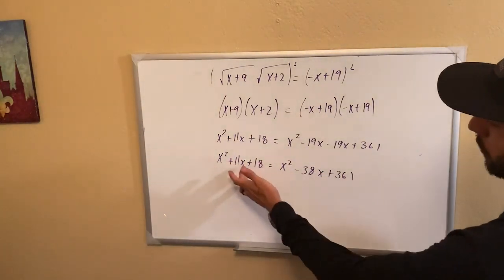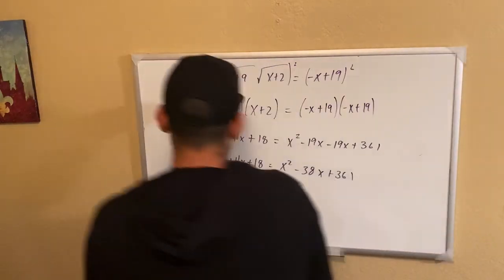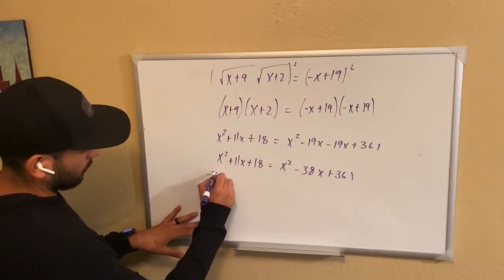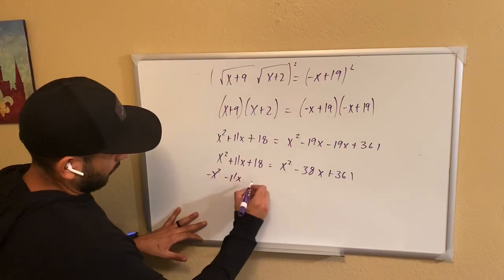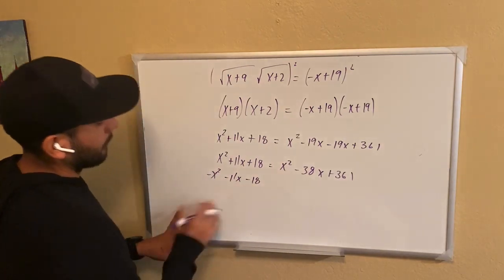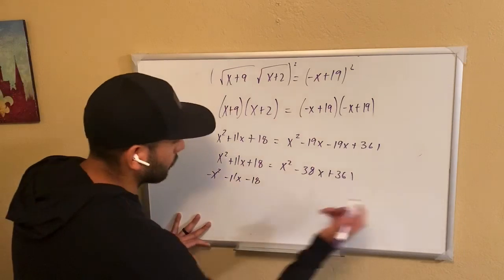Okay, so I'm going to go ahead and bring the x squared, the 11x, and the 18 to the right side by subtracting it, the x squared and the 18. And because I did it on the left side, I'm going to do it to the right side.